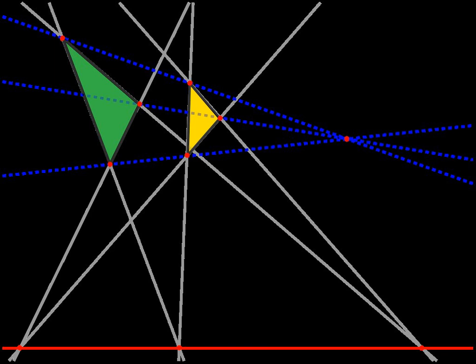A plane in which Pappus's theorem is universally true is called Pappian. Hessenberg showed that Desargues' theorem can be deduced from three applications of Pappus's theorem. The converse of this result is not true; that is, not all Desarguesian planes are Pappian.